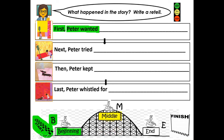Now we're going to slow down and talk about what happened in the middle of the story. Next, Peter tried — what did Peter try to do again? After you say your sentence out loud, push pause and write your first yellow sentence beginning with next. When you're done writing your sentence, push play. Then, Peter kept — what did Peter keep doing until he got better and learned how to do something? After you say your sentence, push pause and write your second yellow sentence. When you're done, push play to rejoin the lesson.